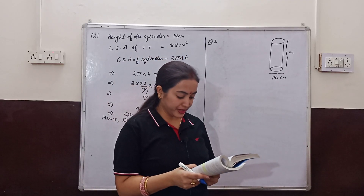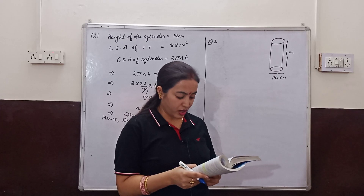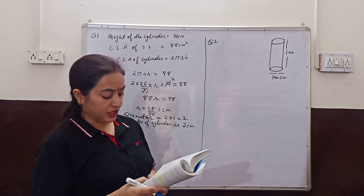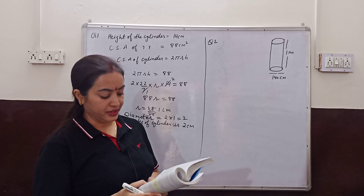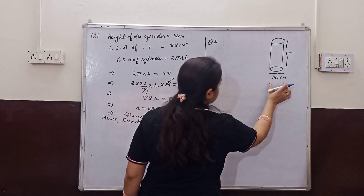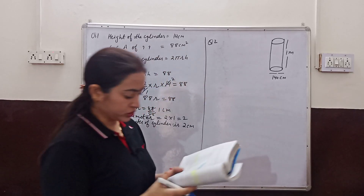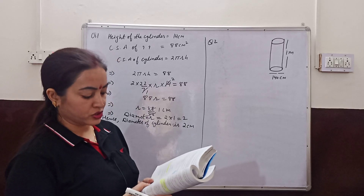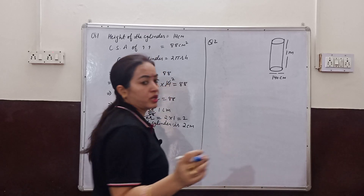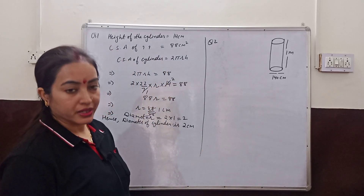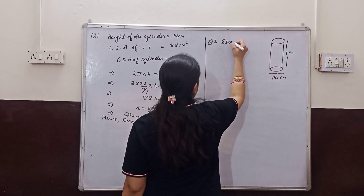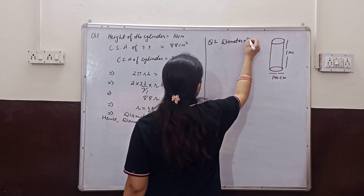So, how many square meters of sheet are required for the tank? We have to make a closed cylindrical tank of height 1 meter. That means we need to find the total surface area of the closed cylinder.